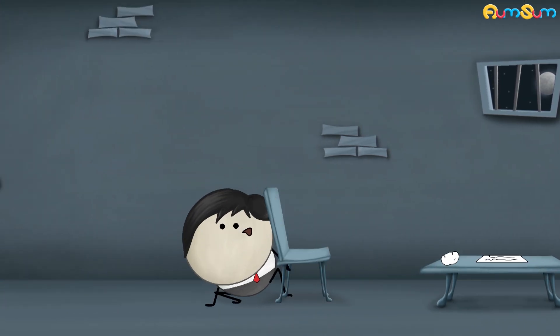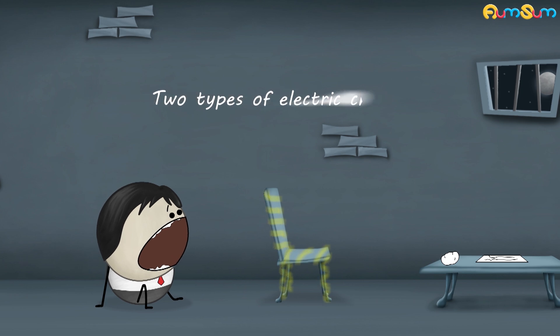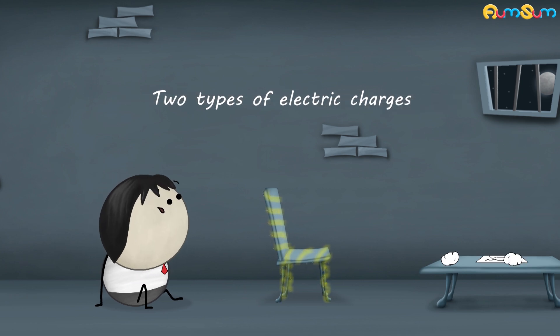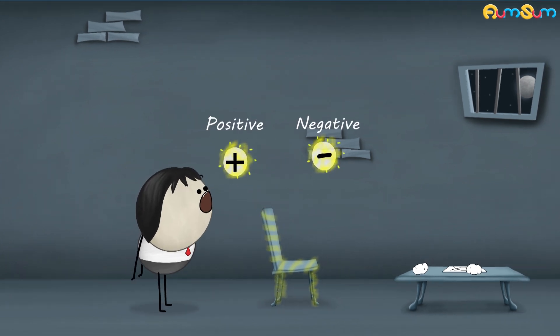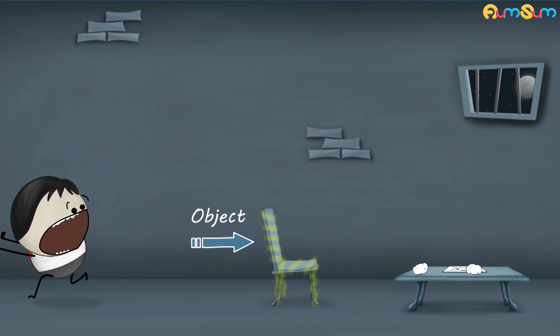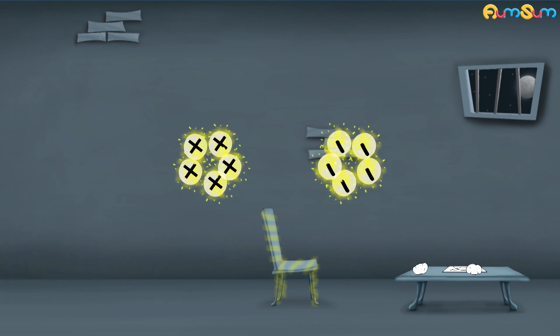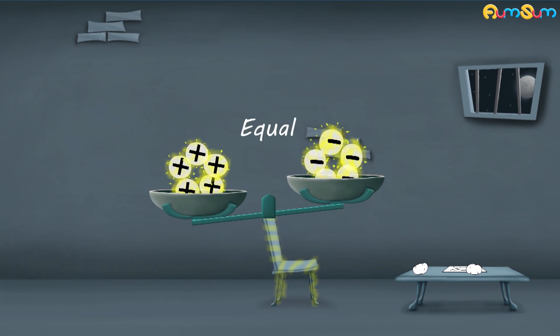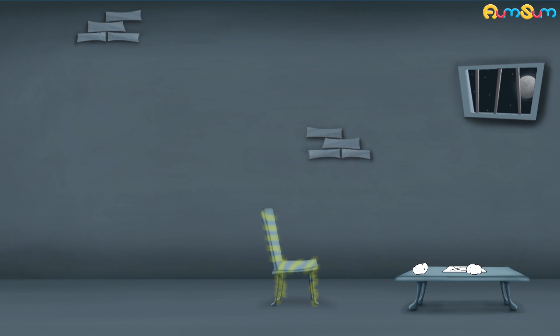Electric charge is the quantity of electricity held in an object. There are two types of electric charges, positive and negative. However, there are some objects where the positive and negative charges are equal to one another. In such cases, we say that the object is electrically neutral.